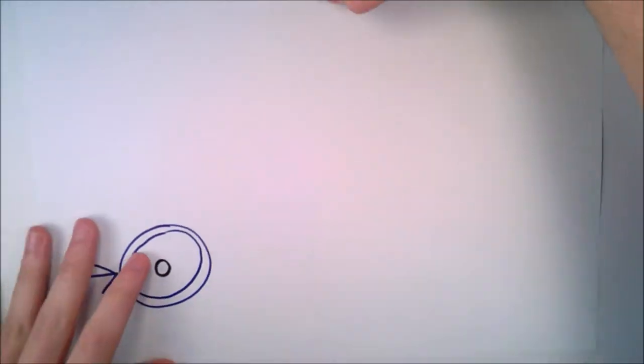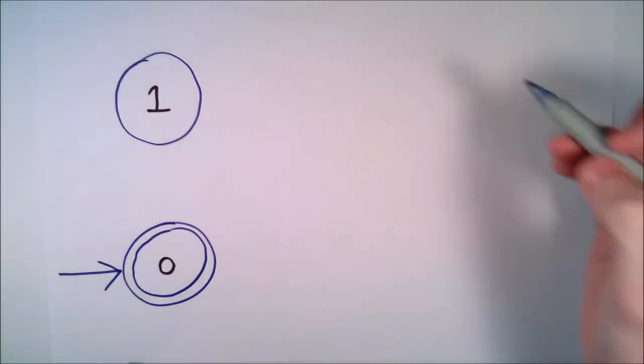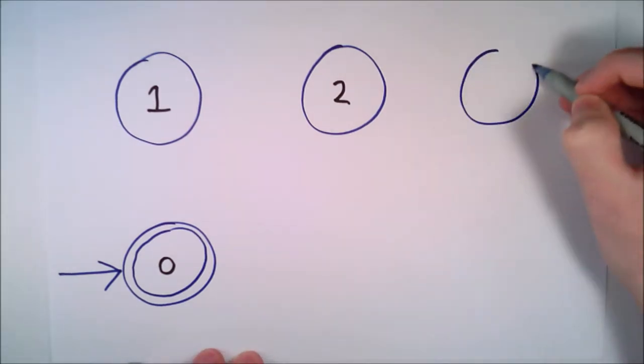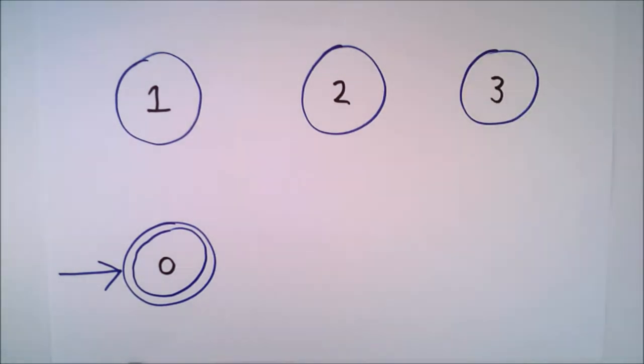One for one B in a row, named one. One for two Bs in a row, named two. And one for three or more Bs in a row, named three.